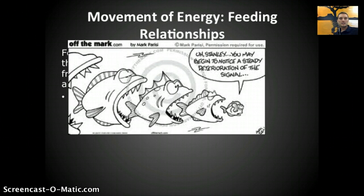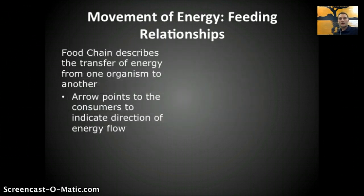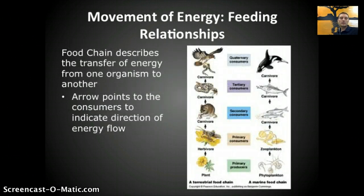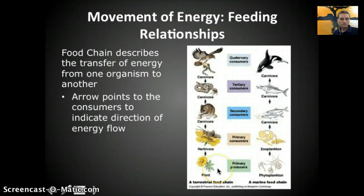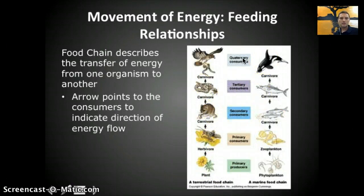If we take a closer look at the movement of energy through ecosystems, we're really looking at feeding relationships — what eats what. A food chain is a way to demonstrate the transfer of energy from one organism to another. In a food chain diagram, the arrow points in the direction of the organism receiving the energy. We have producers, primary consumers, secondary consumers, tertiary, and quaternary consumers. We generally see very few quaternary and even tertiary consumers in the environment.